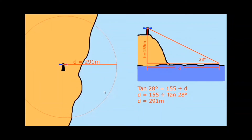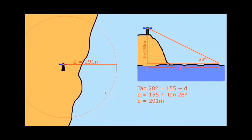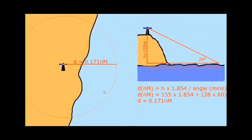That's fine if you're operating in metres, but most charts operate in nautical miles. You can either convert by dividing by 1.852, or use another formula. That formula is: distance in nautical miles equals the height in metres multiplied by 1.854, divided by the angle in minutes. So that is 155 multiplied by 1.854, all divided by 28 degrees times 60 minutes per degree.